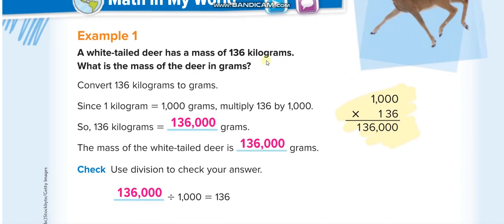Here's an example: a white-tailed deer has a mass of 136 kilograms. What is the mass in grams? Since one kilogram equals one thousand grams, we multiply: 136 times 1000 equals 136,000 grams.